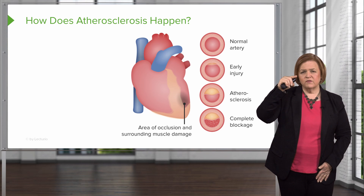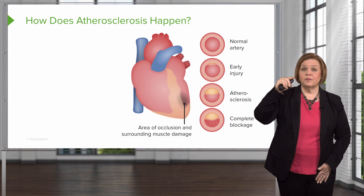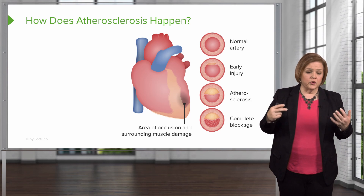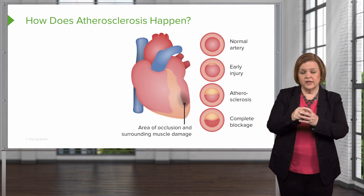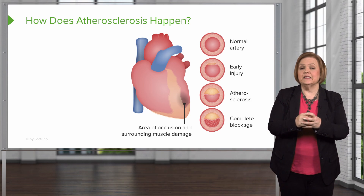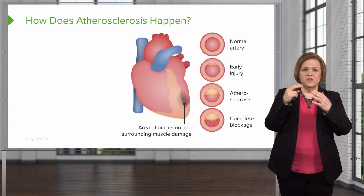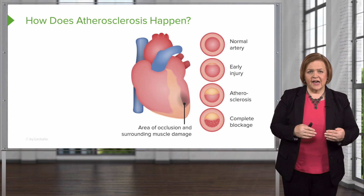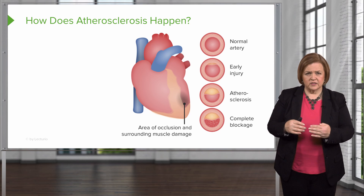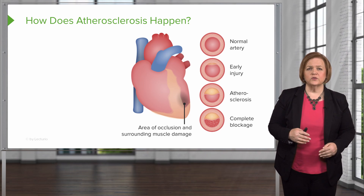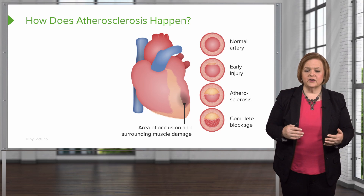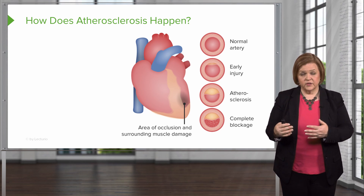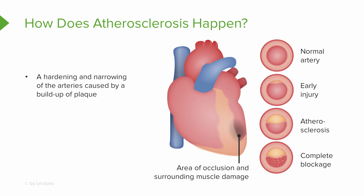When you look at the first three vessels, you see normal, early injury, and then you see the atherosclerosis building up. What happened in the bottom one? Some type of clot broke off, floated through the system, and got to a narrowed part of the artery because of atherosclerosis and completely blocked off the blood supply. Now let's break down some of the teaching points. Atherosclerosis — remember, sclerosis means the hardening, and athero refers to the vessels. File that away in your medical vocabulary to help you sort through other words when they appear with those same suffixes.